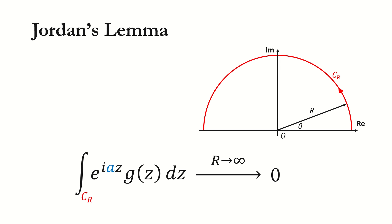First, let's see what Jordan's Lemma says. Suppose we have a semicircle contour with radius r on the upper half plane, and we mark it as C_R.